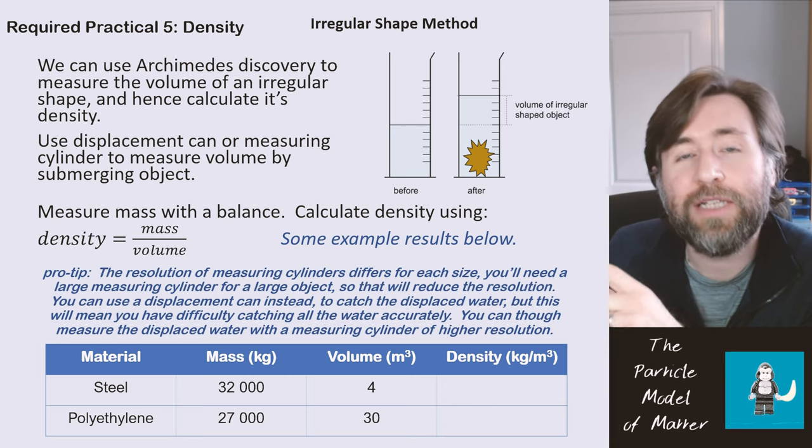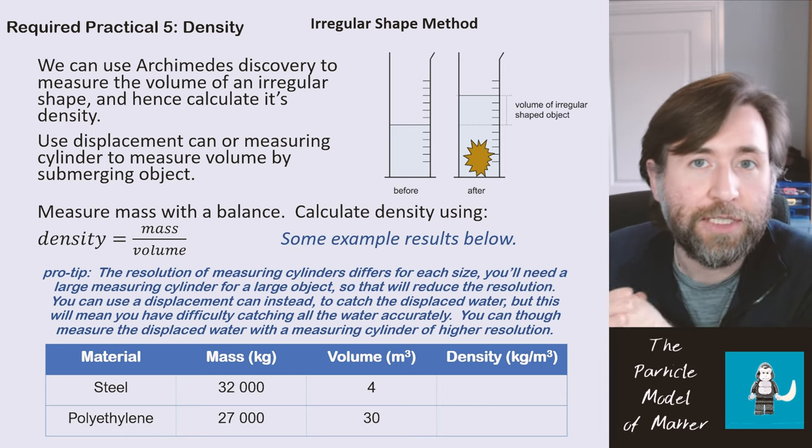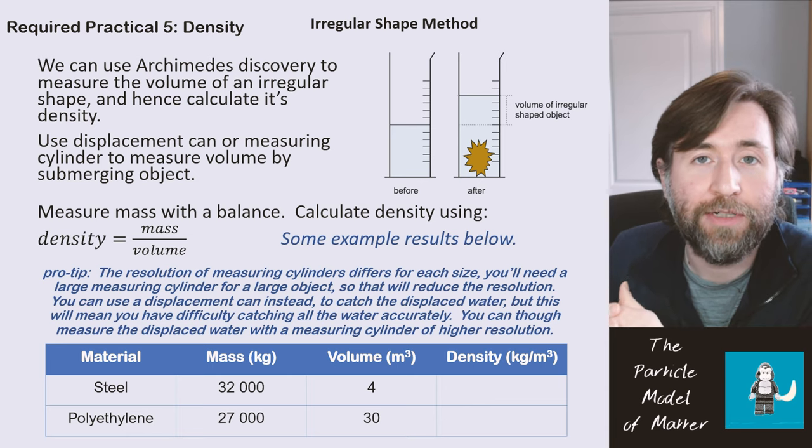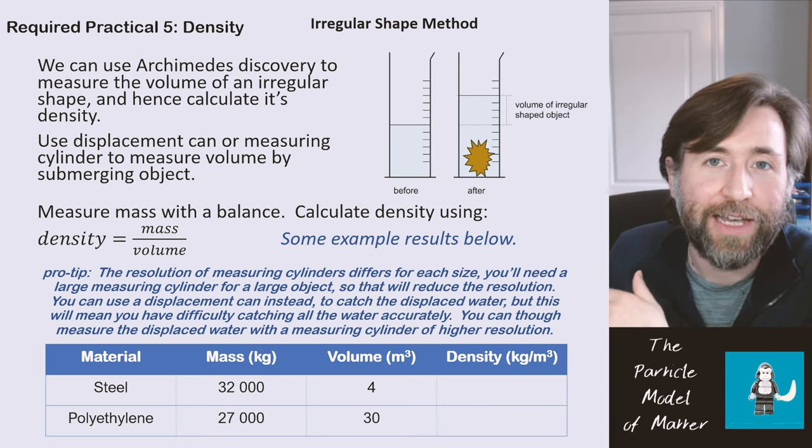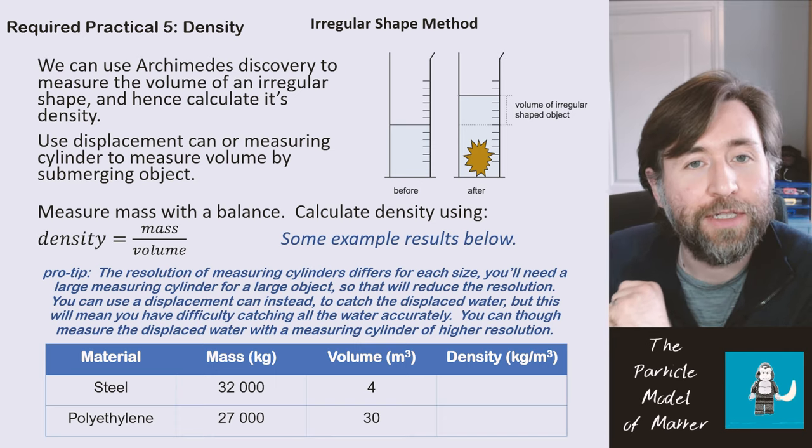So it may be better to use a displacement can, and then measure that volume with a higher resolution measuring cylinder. But then you've got the issue of trying to collect all the water accurately, and not leaving any water in the can or in the measuring cylinder itself.